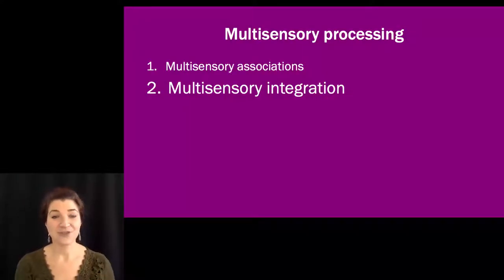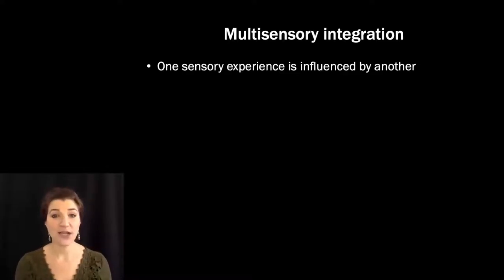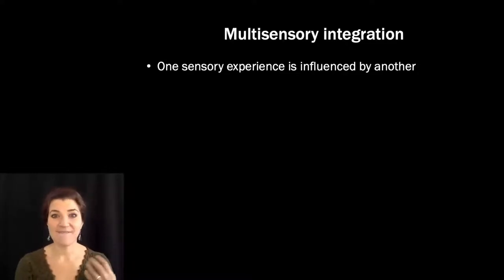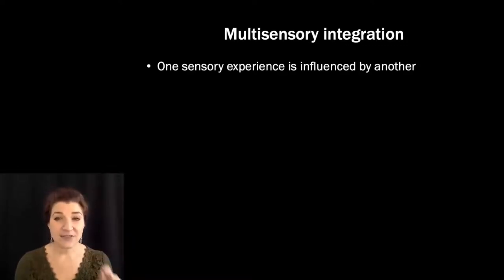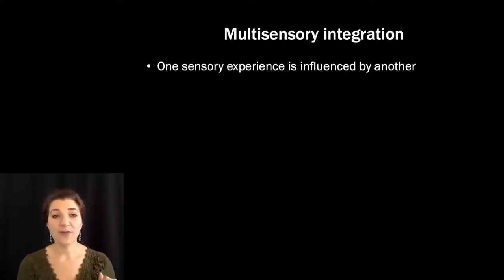We'll talk more later on and in the problem set about where these associations come from and why we have the ones that we do. Our second stop in our multisensory processing journey is multisensory integration — how we integrate information from multiple senses together. Many of our perceptual experiences are multisensory: right now I'm talking to you, you can see my face and hear my words. When you eat food, you both taste it and smell it and feel it in your mouth. For something to demonstrate multisensory integration, you have to get input from multiple sensory systems simultaneously.